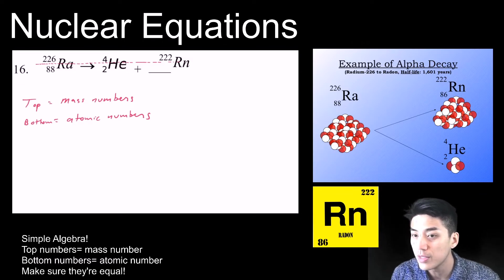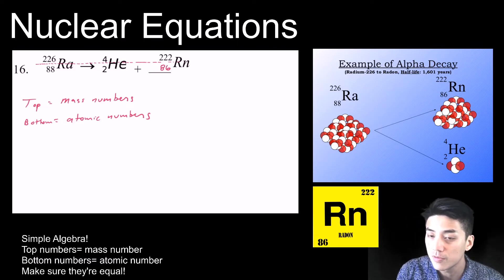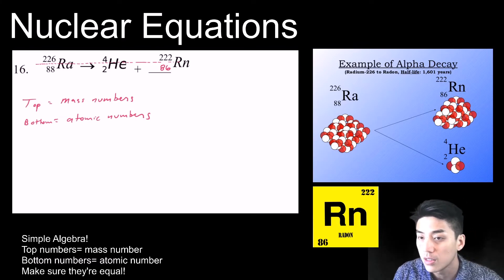So I need to find the missing number in that blank line, and it turns out that missing number is 86, because 86 plus 2 would give me 88 on the other side. So atomic number 86 is radon.